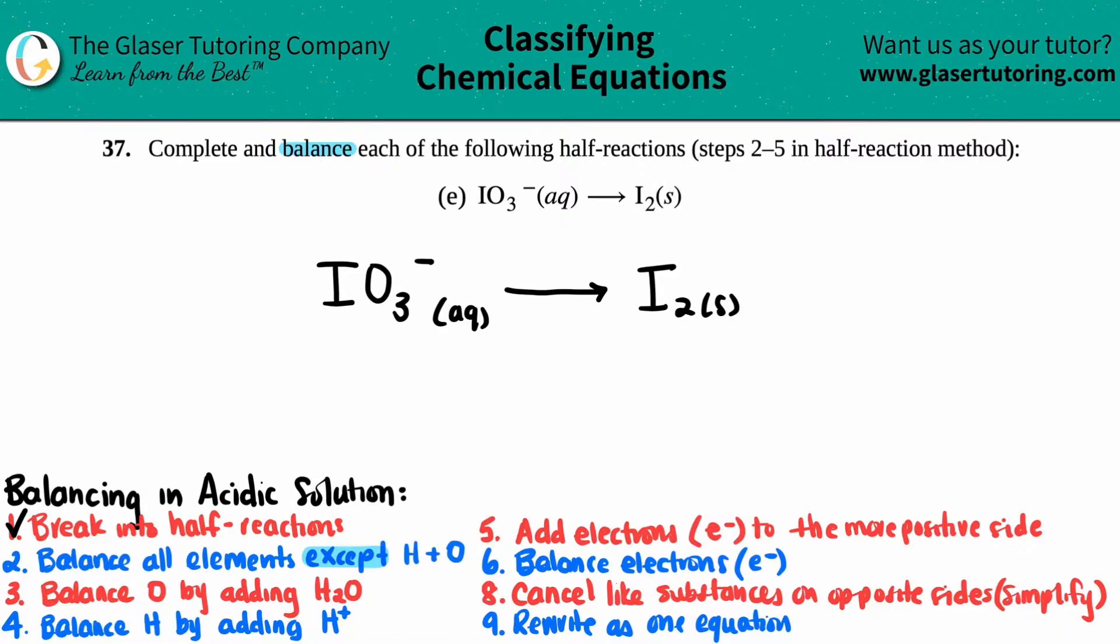For number two, the first thing that you have to do is you have to balance all elements except hydrogen and except oxygen. And just know guys that this is in a numbering system for a reason. You have to follow this numbering system. So it's going to become tedious and monotonous as you keep doing this over and over again. But if you have a system, it makes everything easier. We're going to balance all the elements except for hydrogen and oxygen.